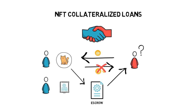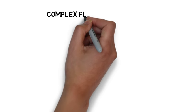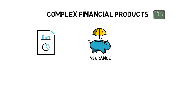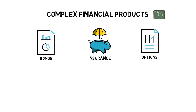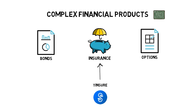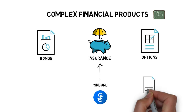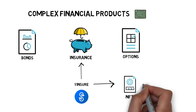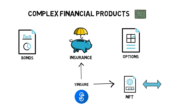This space is really new, but one of the companies that use this model is NFTfy. Besides being used as collateral, NFTs can also represent more complex financial products such as insurance, bonds, or options. Yinsure from Yearn Finance is a good example of NFT usage in the insurance space. In Yinsure, each insurance contract is represented as an NFT that can also be traded on a secondary market such as Rarible.